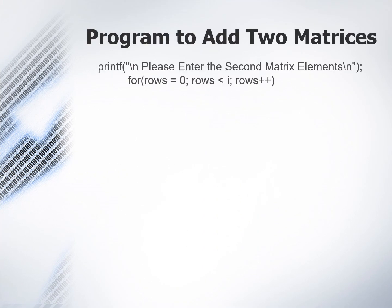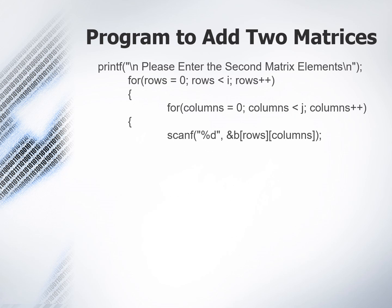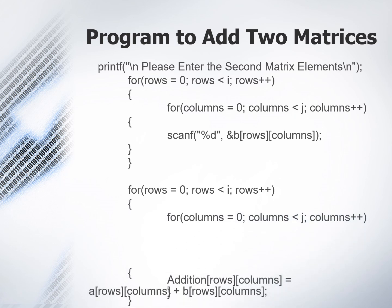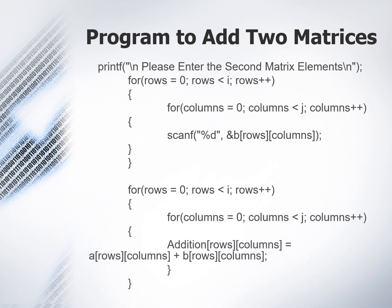Similarly we have to take the input for the second matrix. So we have another similar nested for loop for that, in which we take the input for matrix B. Then we have another nested for loop to store the sum of the corresponding elements in matrix A and matrix B in the addition matrix. The statement stores addition rows columns equals matrix A row column plus matrix B row column.